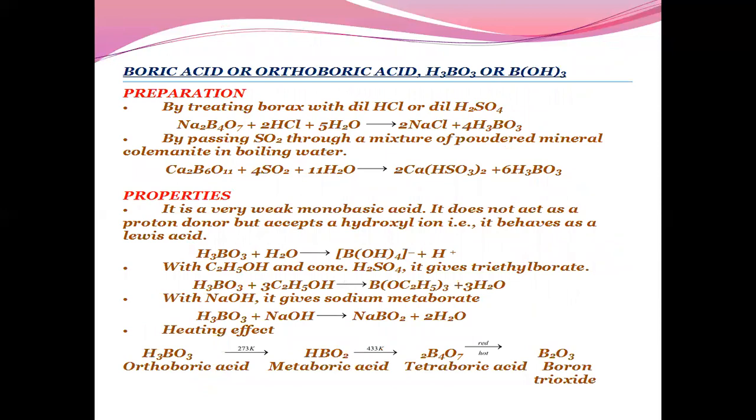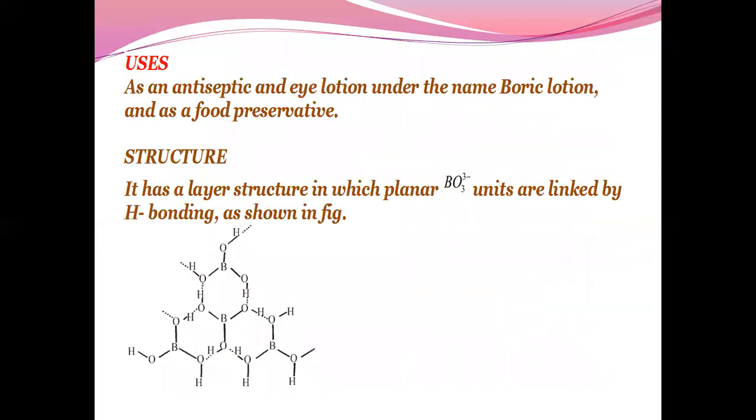Boric acid or orthoboric acid: Preparation by treating borax with dilute HCl or dilute acetic acid, or by passing SO2 through a mixture of powdered mineral colemanite in boiling water. Properties: It is a weak monobasic acid. It does not act as a proton donor but accepts a hydroxyl ion, that is it behaves as a Lewis acid. With alcohol and concentrated sulfuric acid it gives triethyl borate. With NaOH it gives sodium metaborate. Uses: as an antiseptic and eye lotion under the name boric lotion and as a food preservative. Structure: It is a layered structure in which planar BO3 units are linked with hydrogen bonding.